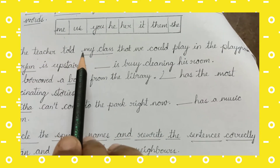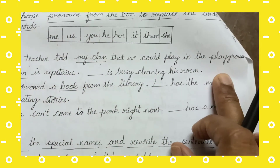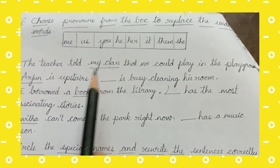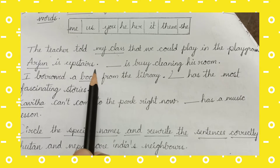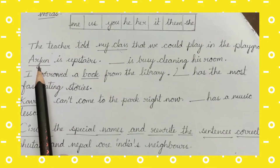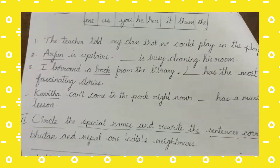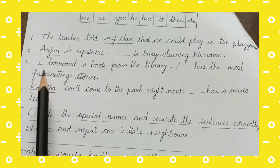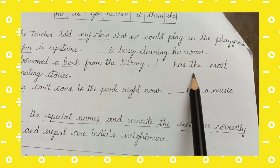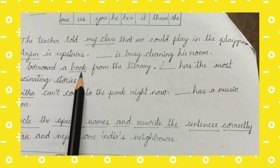First sentence: 'The teacher told my class that we could play in the playground.' The underlined word is 'my class', so you have to replace it with the correct pronoun. Second: 'Arjun is upstairs. Dash is busy cleaning his room.' The underlined noun is 'Arjun', replace it with the correct pronoun. Third: 'I borrowed a book from the library. Dash has the most fascinating stories.' The underlined word is 'book'.